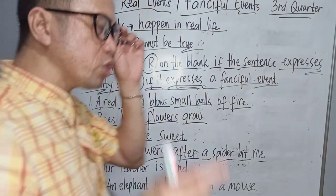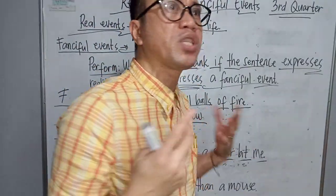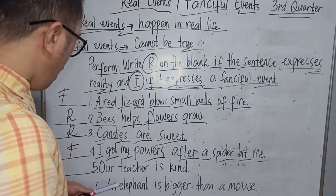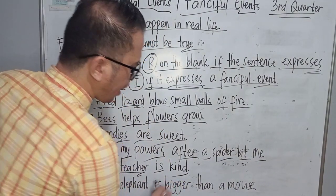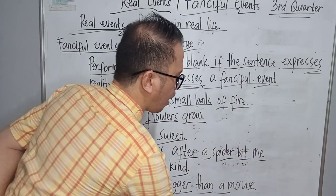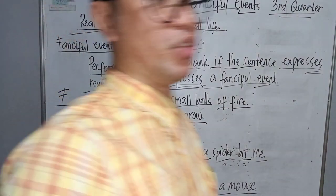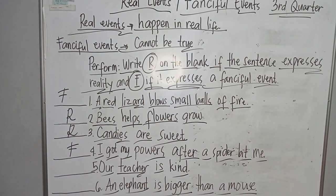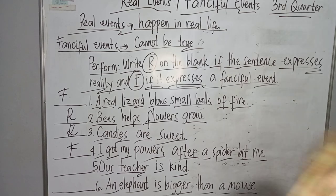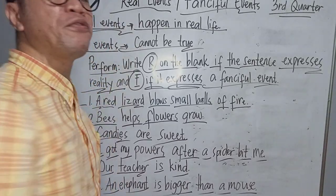Now, let's have numbers five and six. I want you to think first, but I'm going to read them and give you time to decide whether the answer is R for real events or F for fanciful events. An elephant is bigger than a mouse. I know that you are ready — here we go. Let's answer numbers five and six.